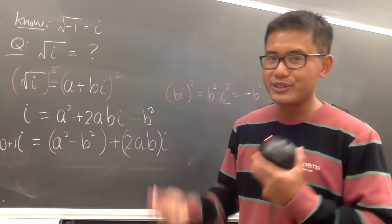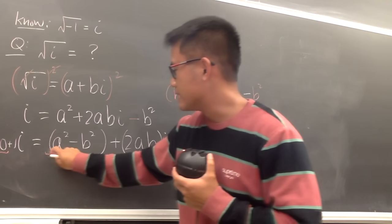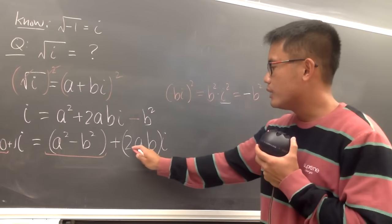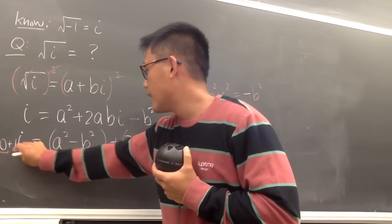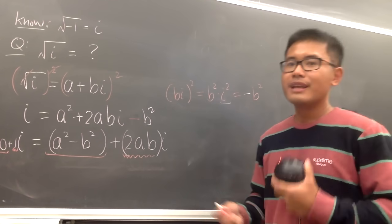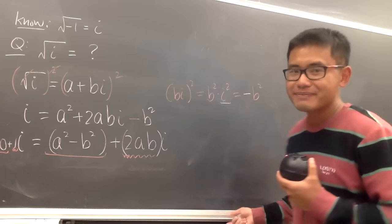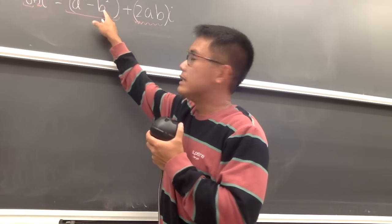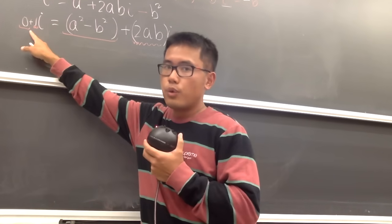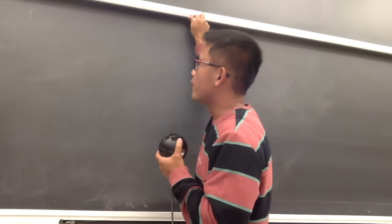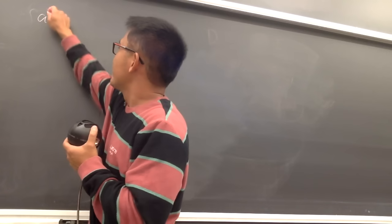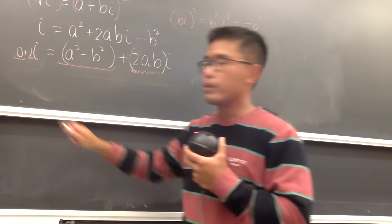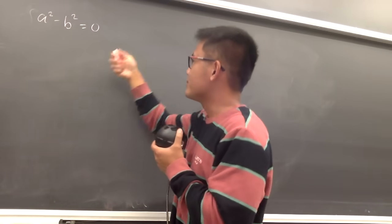Now we can match the real and imaginary parts. The real part on the left is 0, which must equal a² minus b² on the right. The imaginary coefficient on the left is 1, which must equal 2ab on the right. This gives us our system of equations: a² minus b² equals 0, and 2ab equals 1.